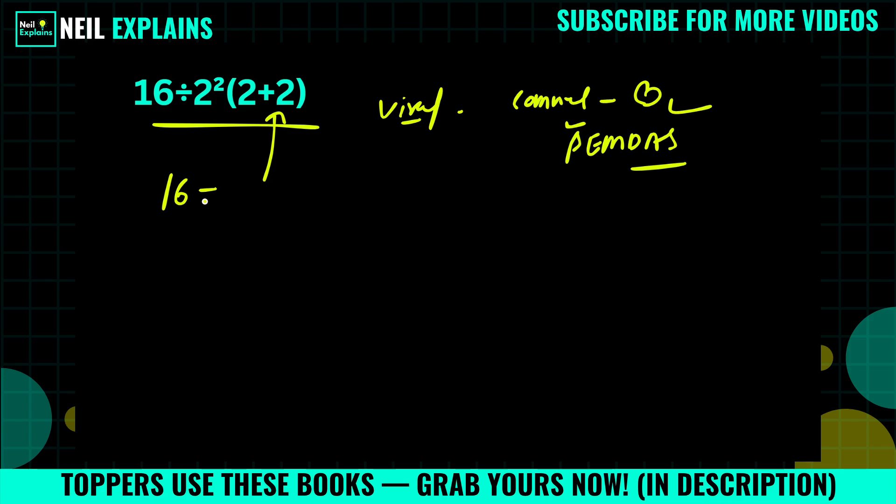What we have? 16 divided by 2 squared, 2 plus 2, that is equal to 4. And what does 2 squared mean? That means 2 into 2, that is equal to 4. Okay, so we can write 16 divided by 4 into 4.